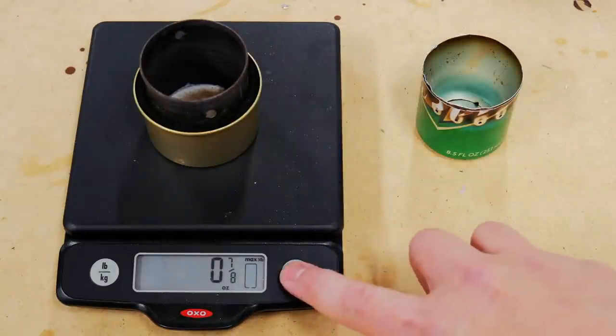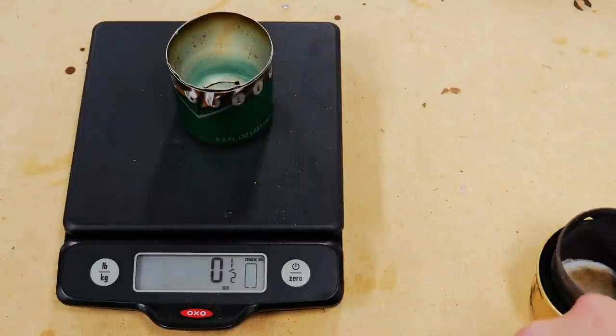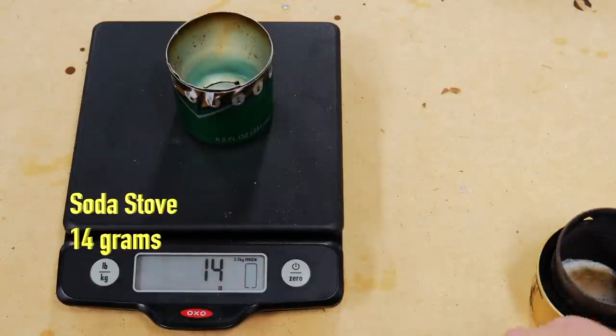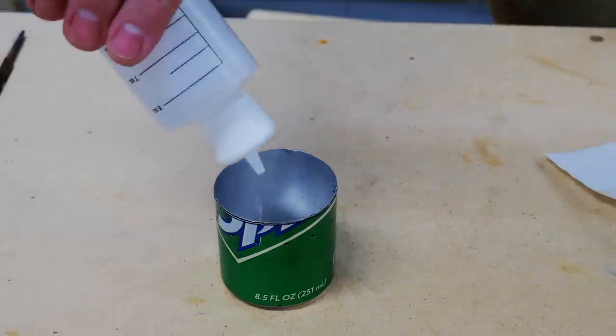I'll do a quick weigh. This is the original cat can stove. It's 25 grams and my new stove is 14 grams. That's a pretty good difference if it performs as well or better than the cat can stove.